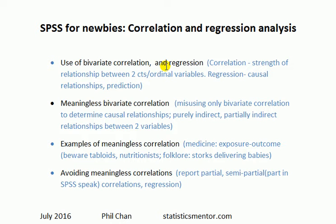Let's start with the use of bivariate correlation and regression. Just to recap: correlation is a number between minus one and plus one inclusive, and it measures the strength of relationship between two continuous or ordinal variables. Your professor might not use the word 'bivariate' — they might just say 'correlation' — but they will mean bivariate correlation. That's important because by the end of the video we'll see there are two other types of correlation.